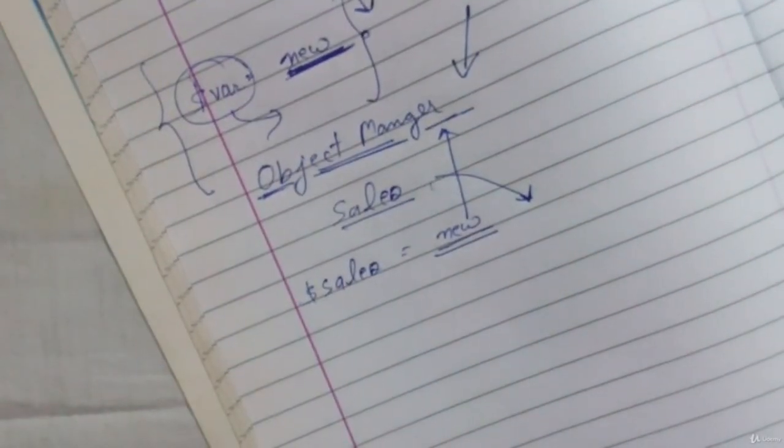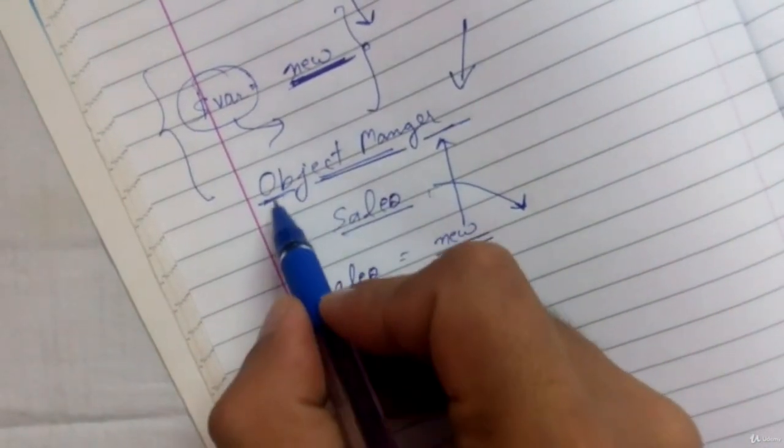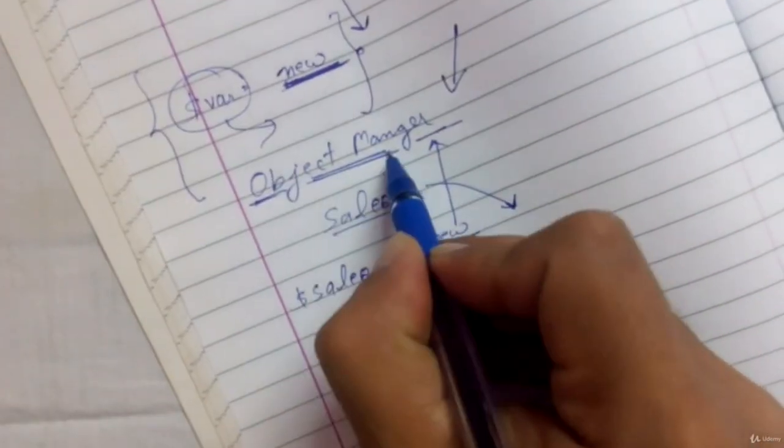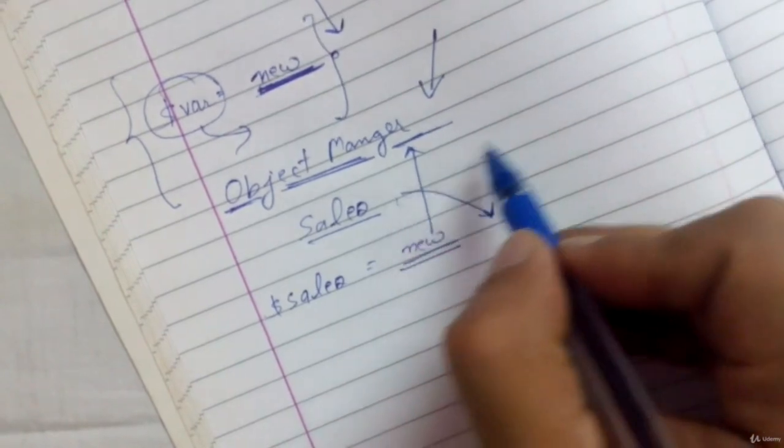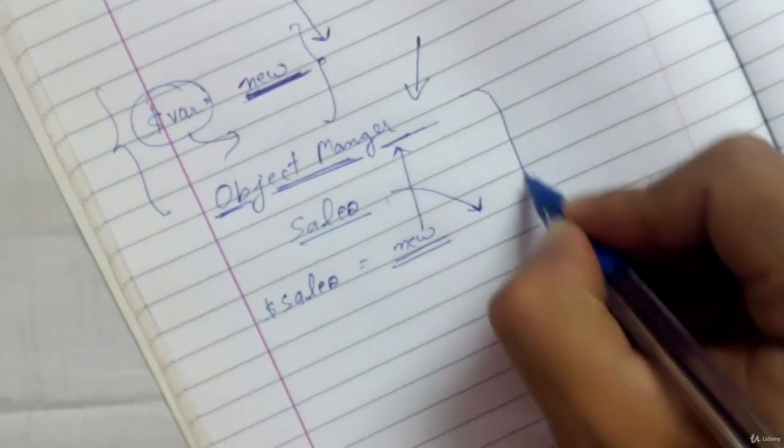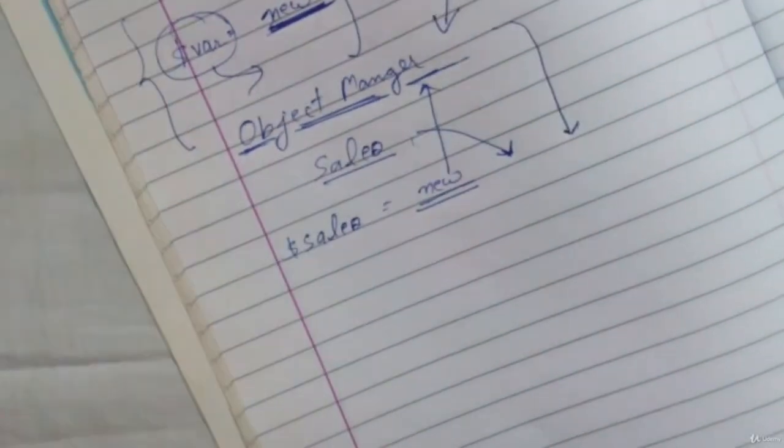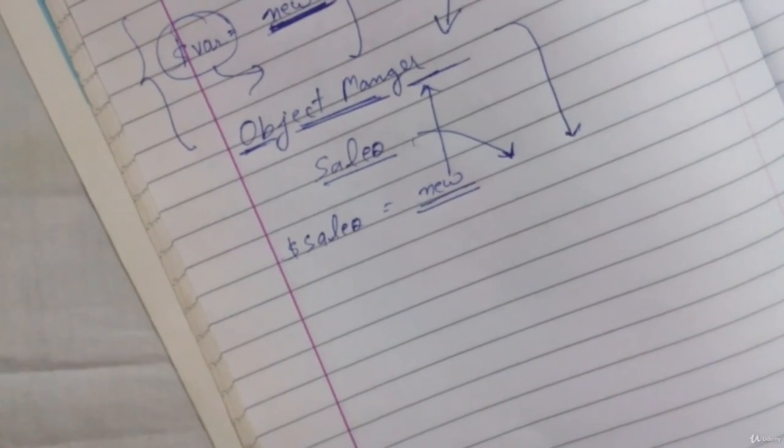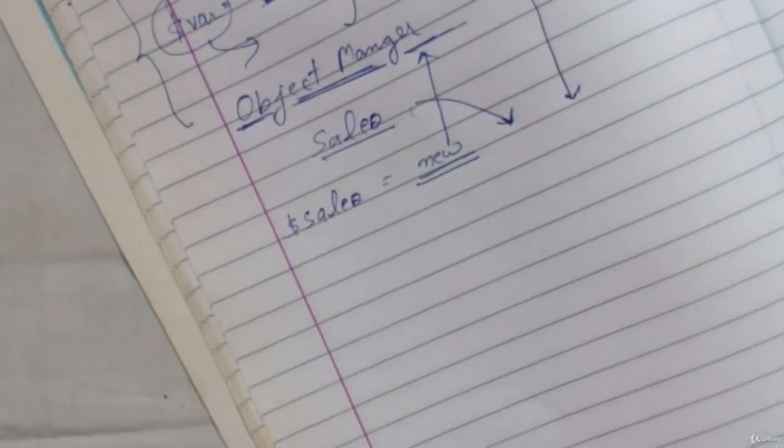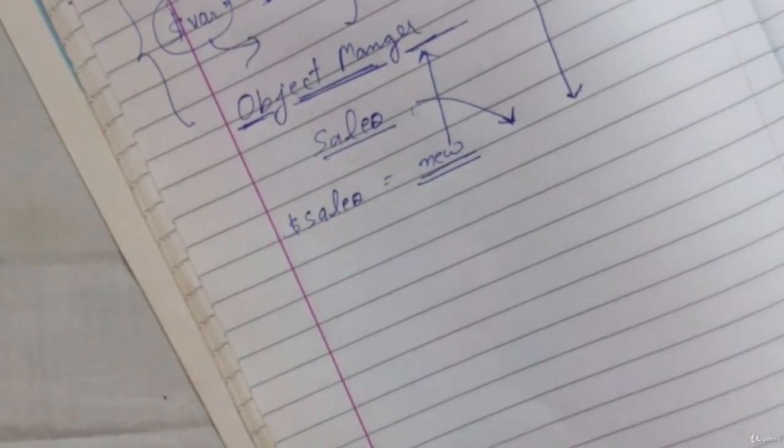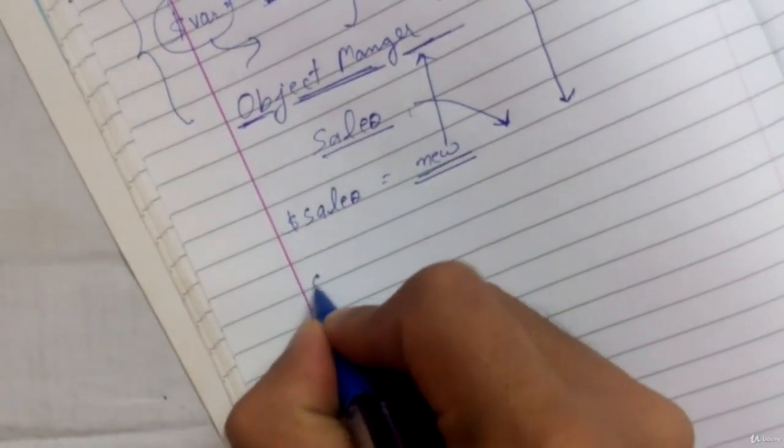So I'm not going to use this 'new' keyword, but I'll be using this Object Manager or instance of this Object Manager with my sales class name. So overall we will be pushing an intermediate class to create all the objects. Now what are the advantages of this class? First thing is automatic dependency injection, which is an advanced PHP concept.